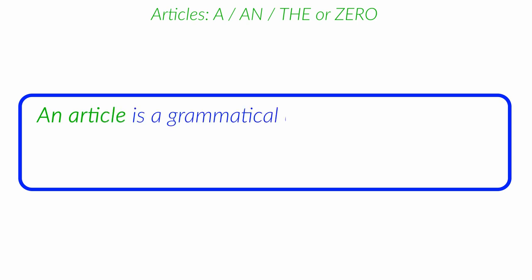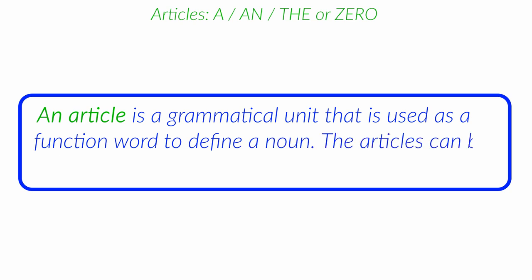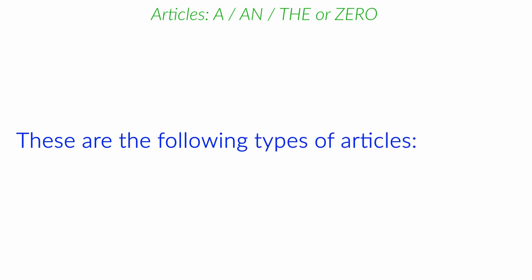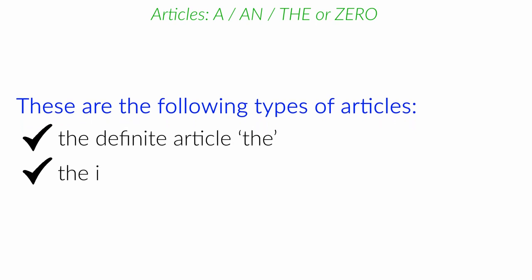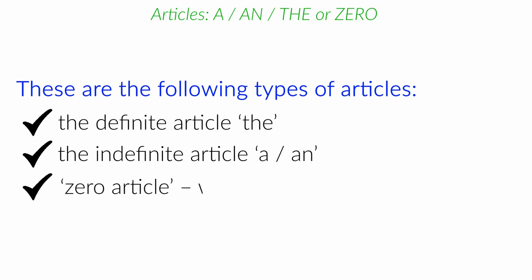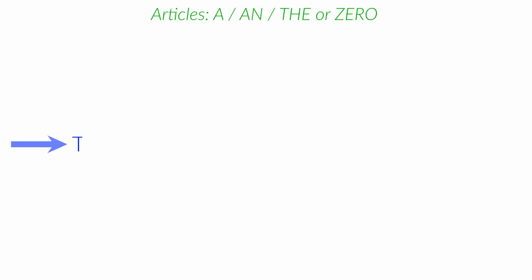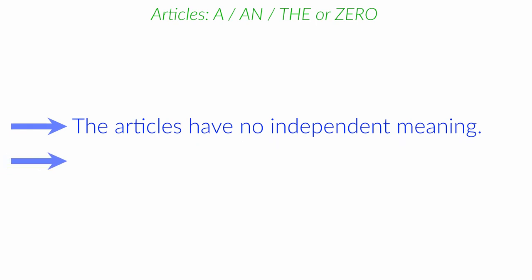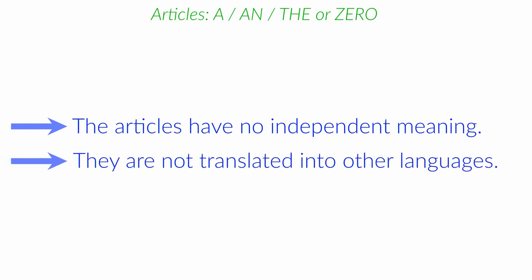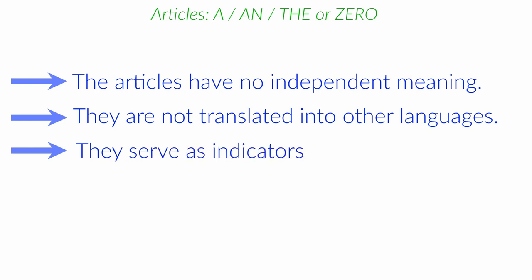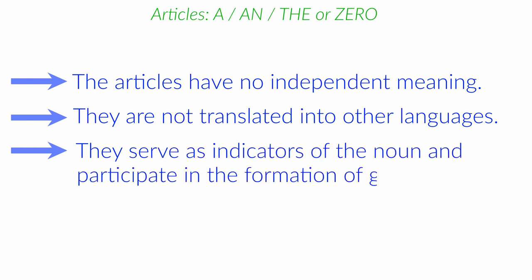An article is a grammatical unit that is used as a function word to define a noun. The articles can be used with any noun, a person, place, idea or object. These are the following types of articles that are used in spoken and written languages. The definite article, the, the indefinite article, a or an, and zero article, when the article is not used. The articles have no independent meaning. Moreover, they are not translated into other languages. Nevertheless, they serve as indicators of the noun and participate in the formation of grammatical structure.